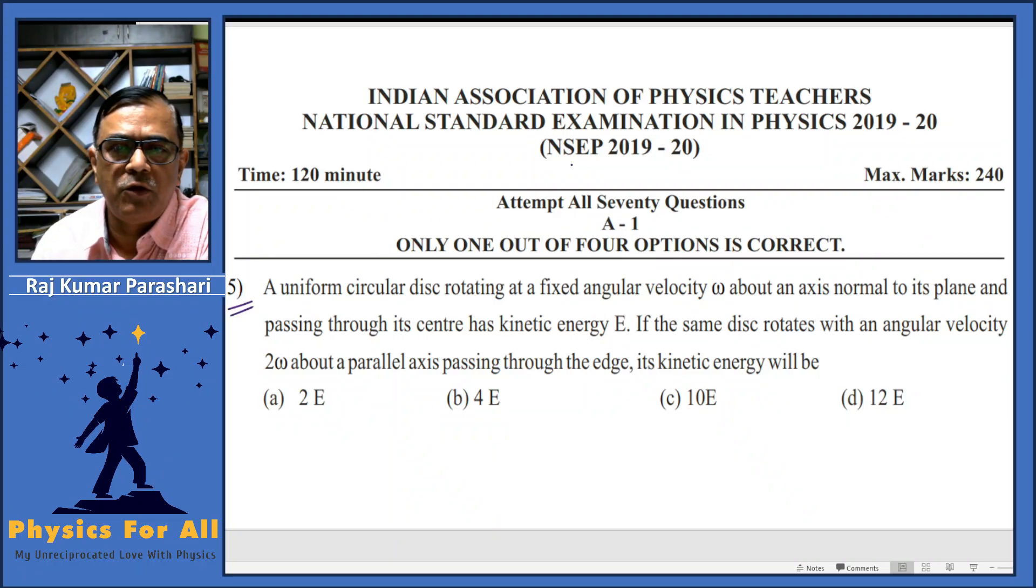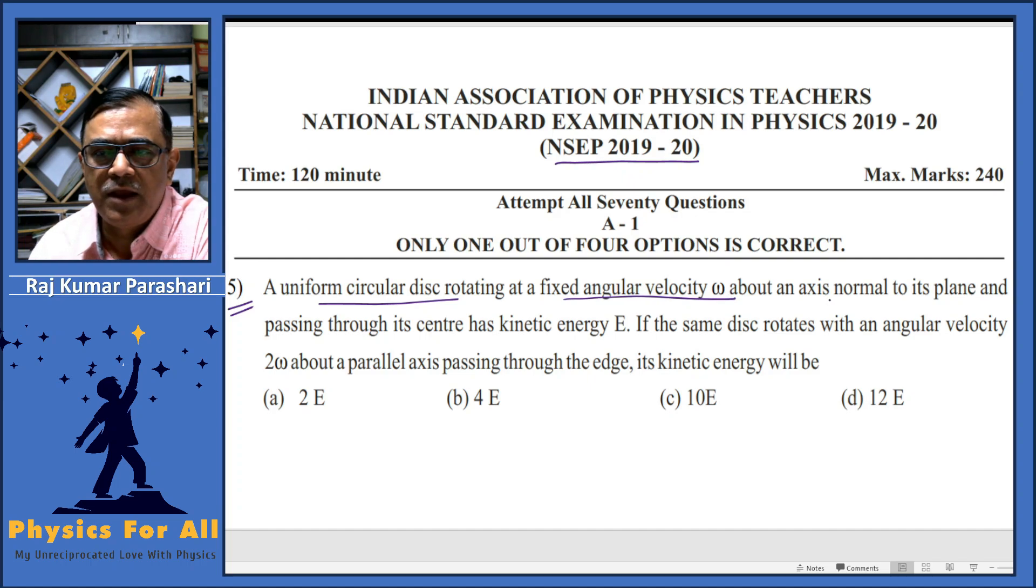Question number 5 of NACP 2019-20. In this problem we have a uniform disc rotating with angular velocity omega about its own axis. The rotational kinetic energy is E.